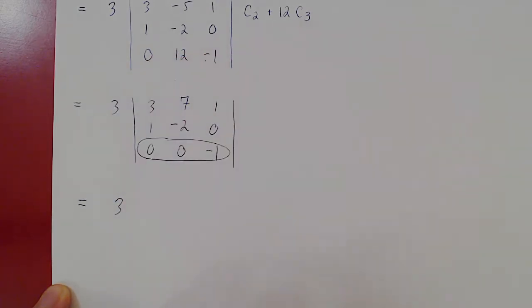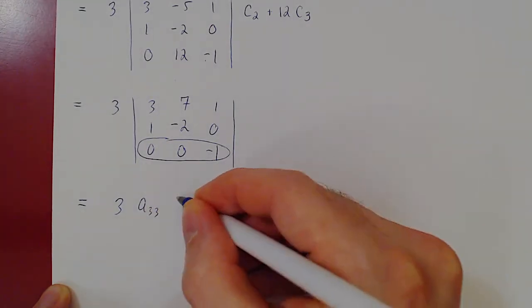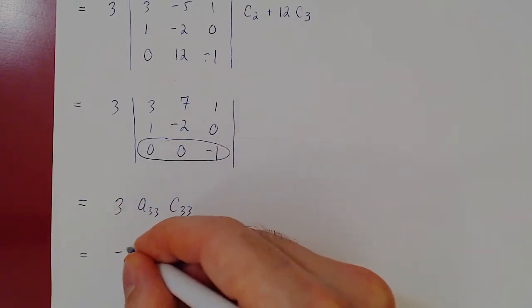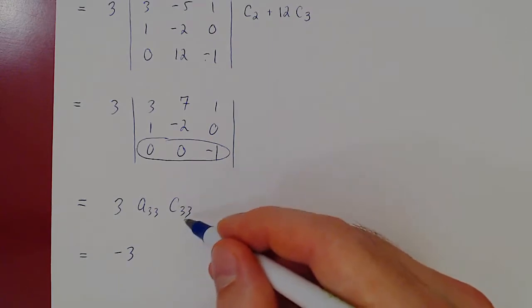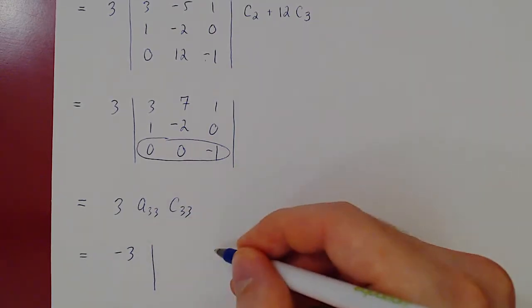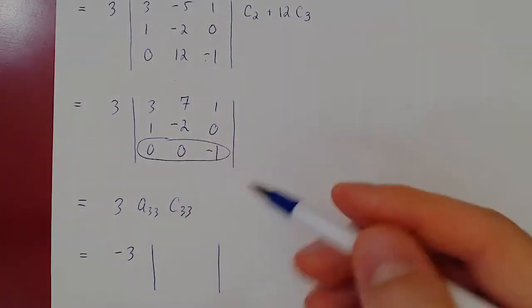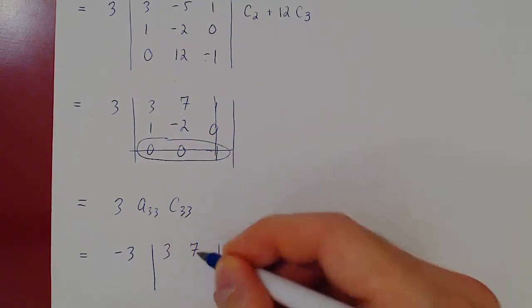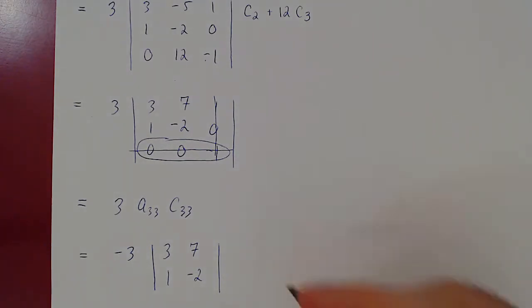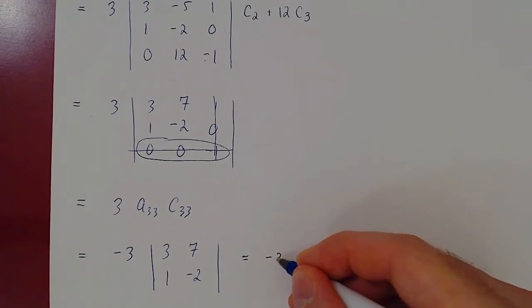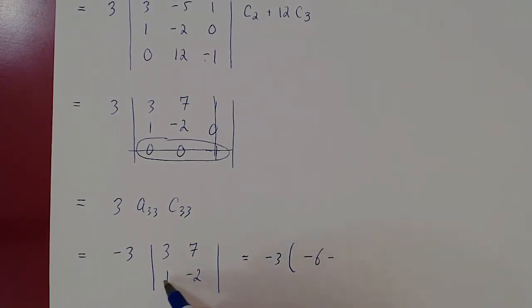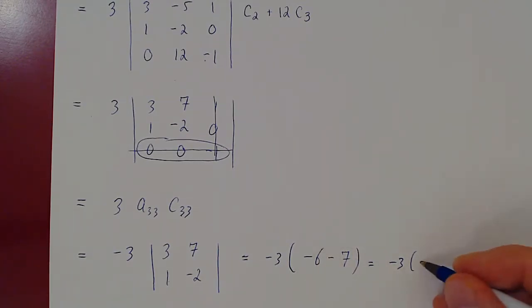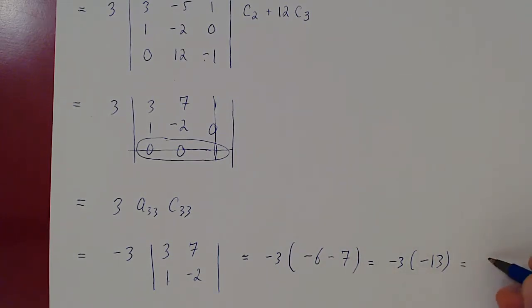All we're left with is a3,3 times C3,3. Don't forget the 3 out front: 3 times a3,3 times C3,3. a3,3 is negative 1, so this gives negative 3. The cofactor C3,3 is negative 1 to the 6, which is positive 1, times the determinant of the 2 by 2 matrix 3, 7, 1, negative 2. Using ad minus bc: ad is 3 times negative 2 which is negative 6, minus bc which is 1 times 7, giving negative 7. So negative 6 minus negative 7 is negative 13. Then negative 3 times negative 13 gives us positive 39.